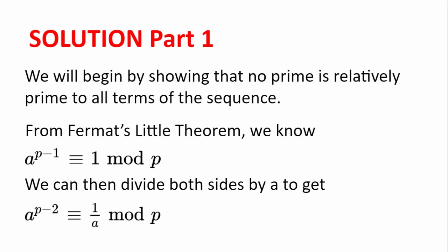We will begin by showing that no prime is relatively prime to all the terms of the sequence. From Fermat's Little Theorem, we know that for some prime p, a to the power of p minus 1 is congruent to 1 modulo p. We can divide both sides by a to get a to the power of p minus 2 congruent to 1 over a, modulo p.